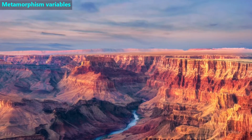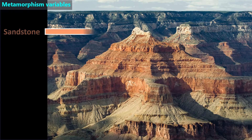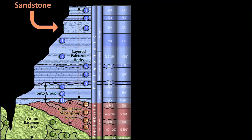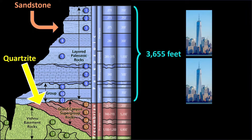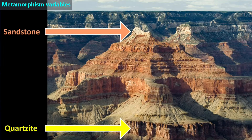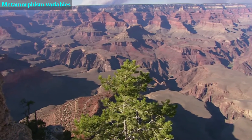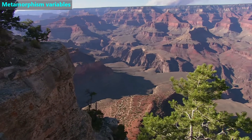The Grand Canyon has been covered by sand on multiple occasions, which formed a lot of sandstone. In this photo, we see sandstone at the top. Near the bottom, we find quartzite. Here's a side view that shows us some layers. When we add the height of each layer, there is more than 3,500 feet of rock above the quartzite — more than twice the height of our country's tallest skyscraper. That means the quartzite is under very high pressure. This tells us that one of the variables needed for metamorphism is pressure.